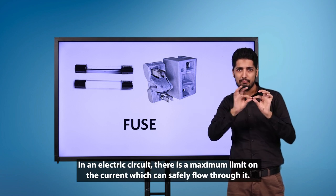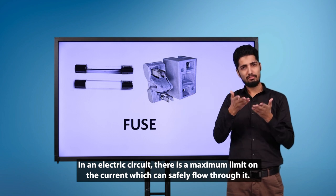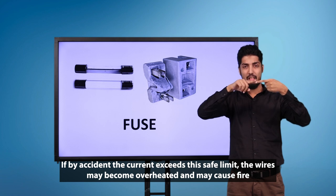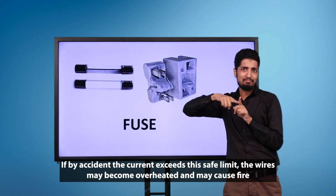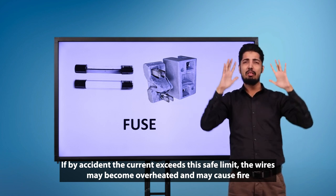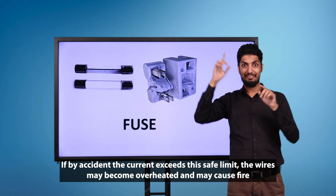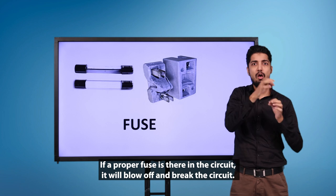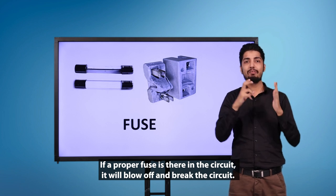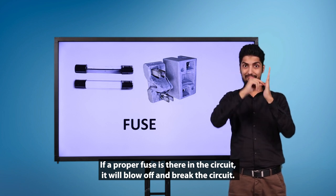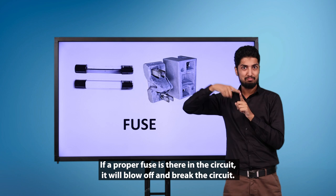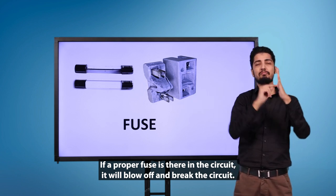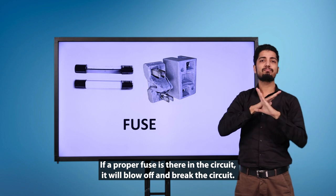In an electric circuit, there is a maximum limit on the current which can safely flow through it. If by accident the current exceeds this safe limit, the wires may become overheated and may cause fire. If a proper fuse is there in the circuit, it will blow off and break the circuit.